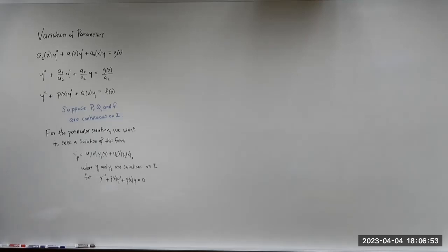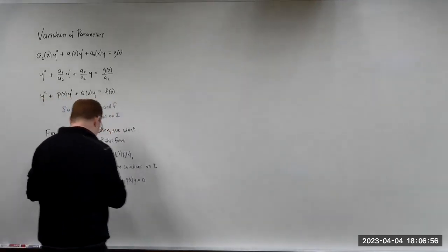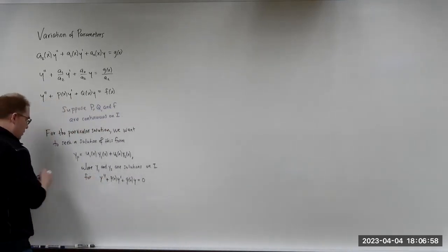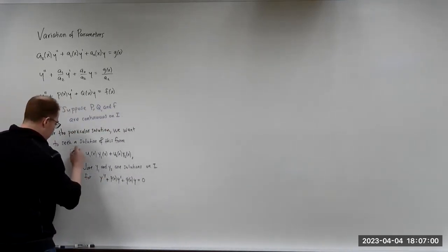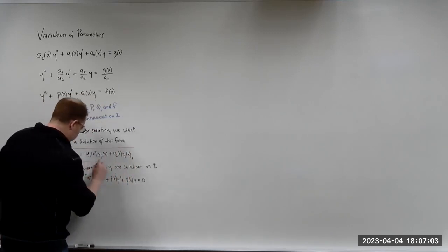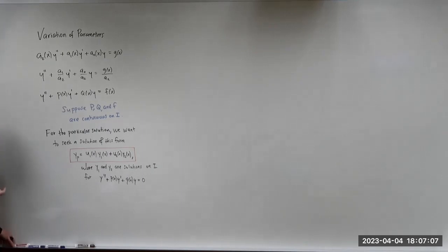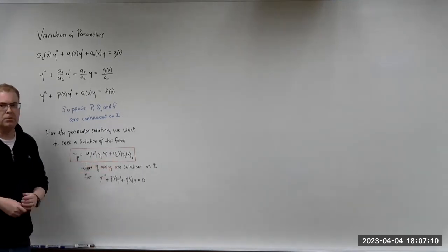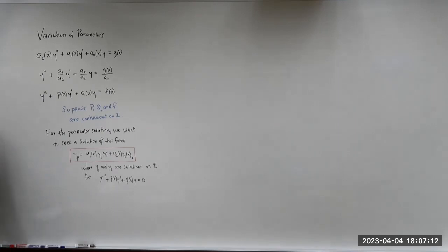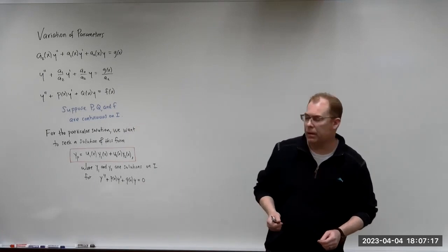The homogeneous equation is Y double prime plus P(X) Y prime plus Q(X) Y equals zero. Our goal is to figure out U1 and U2. Once we have that, we have our variation of parameters formula. With any derivation, we take our solution form, substitute it back into the differential equation, expand everything out, and derive the formula.